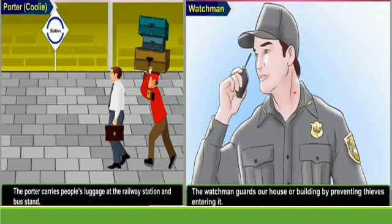Can you see this picture? Correct! It is a Watchman. In your building or complex, you will see a Watchman near the gate. The Watchman guards our house or building by preventing thieves from entering. He keeps all records of who is coming in and who is going out. So he is preventing thieves from entering our house — he is also our helper.